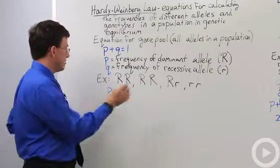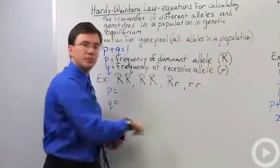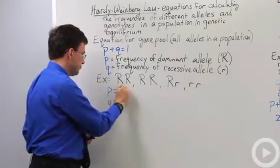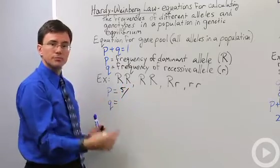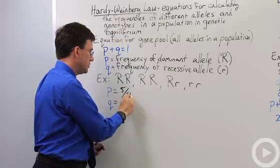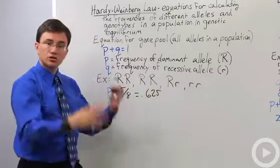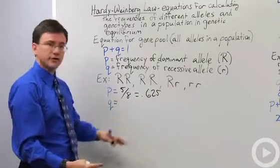Well, I would solve this simply by counting up one, two, three, four, five big R alleles out of a total number in my gene pool of one, two, three, four, five, six, seven, eight alleles, which gives me 0.625. So P, in this case, is 0.625.